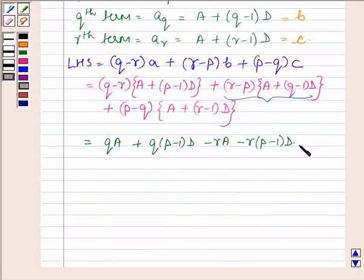Now simplifying the next one will give us plus rA plus r(q-1)D minus pA minus p(q-1)D